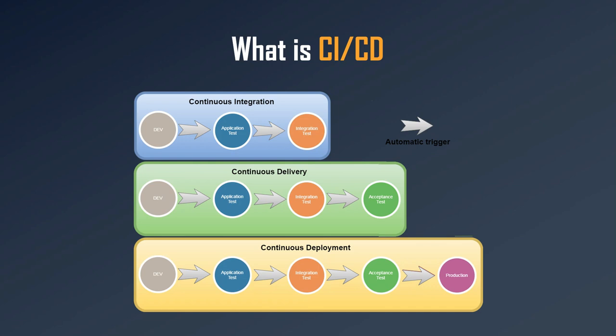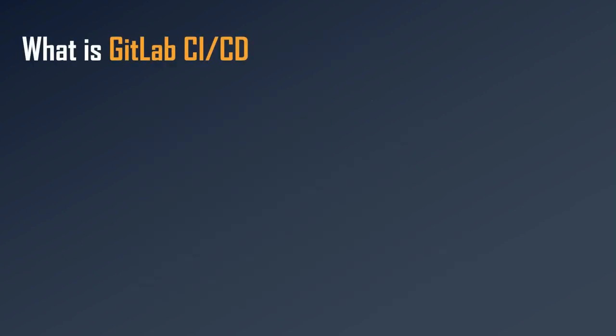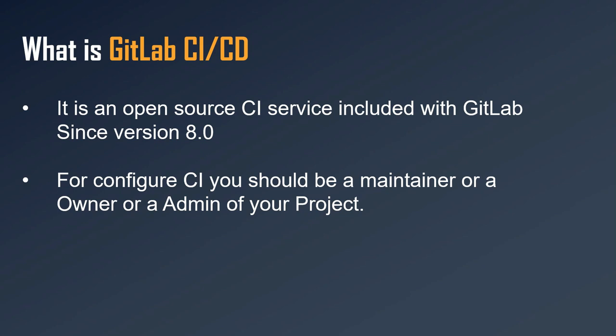In GitLab we also have Continuous Integration, Delivery, and Deployment. GitLab CI is an open-source CI service included with GitLab, and by default it is integrated with every project since version 8.0. If you are using version 8.0 or above, GitLab CI is enabled by default on every project. To configure GitLab CI you should be a Maintainer, Owner, or Admin on your project.